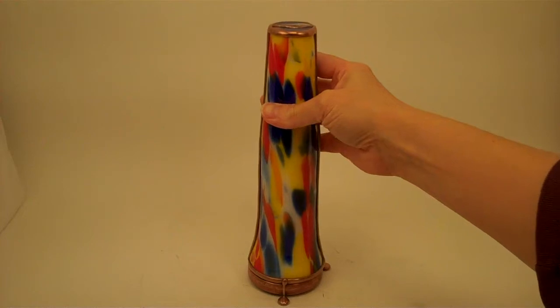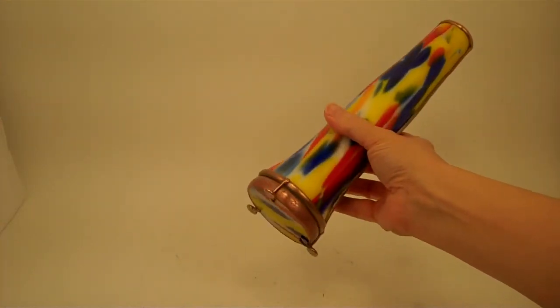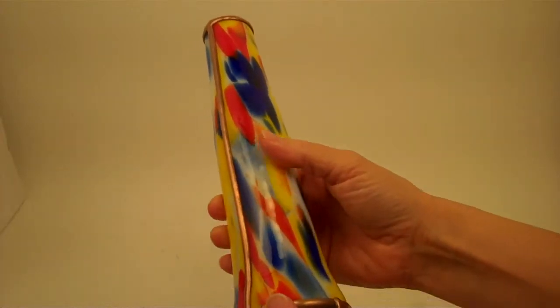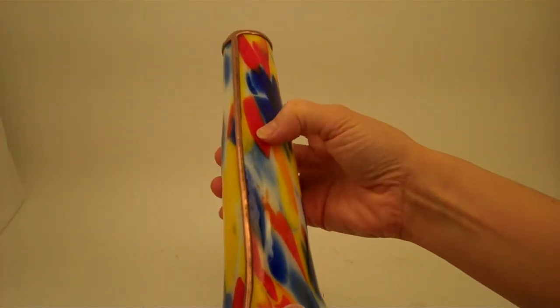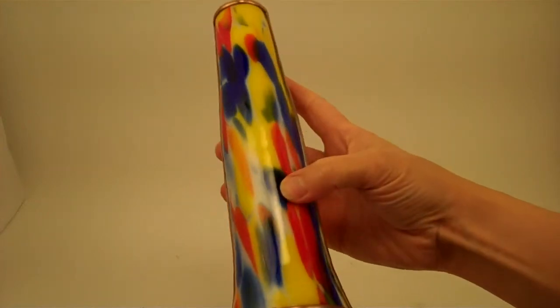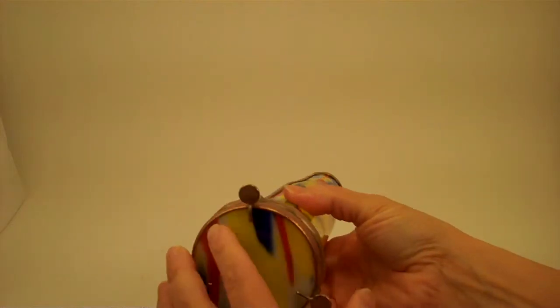This is the Spirit Kaleidoscope and the exterior is fused and slumped glass in bright, incredible primary colors. We have the cobalt, the flame red, the canary yellow and white all fused and slumped together in this beautiful cone shape.